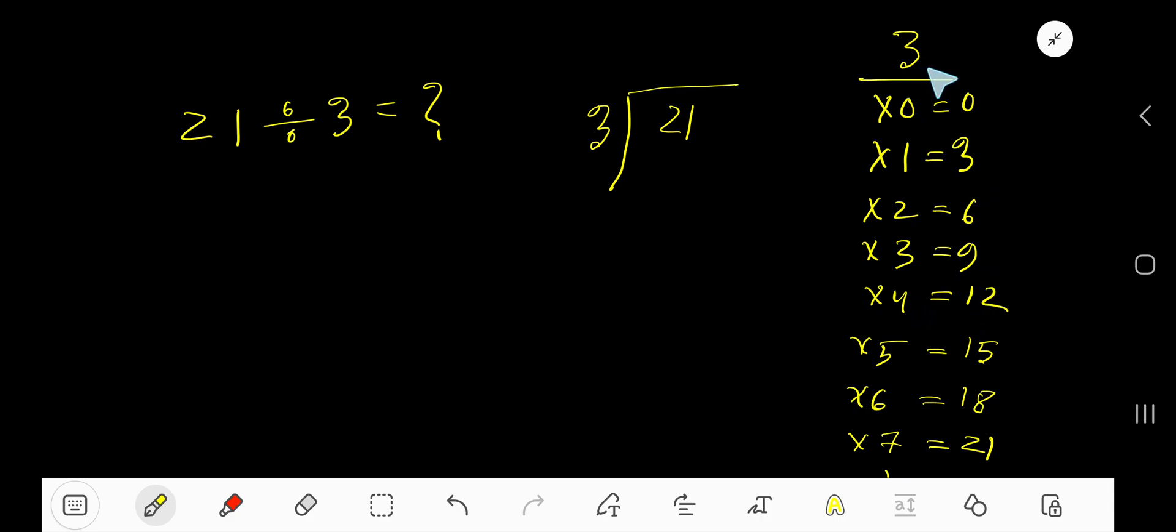To find the multiplication table of 3, just add 3 to the previous step: 0 plus 3 is 3, 3 plus 3 is 6, 6 plus 3 is 9, 9 plus 3 is 12, 12 plus 3 is 15, 15 plus 3 is 18. Now, 3 goes into 2...